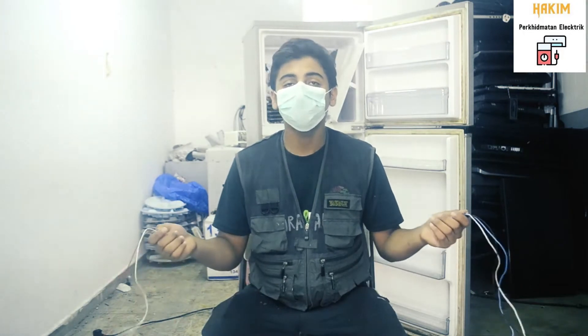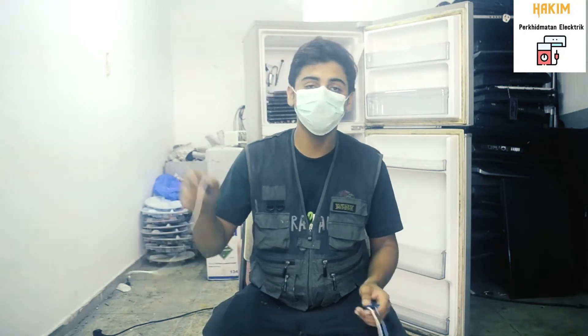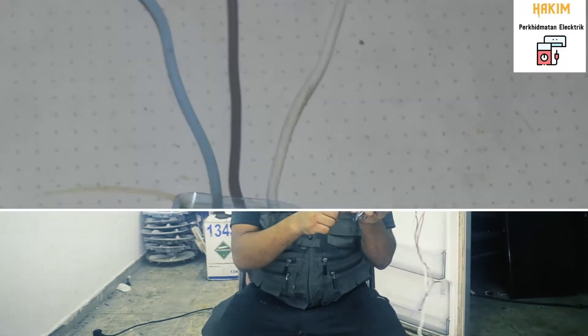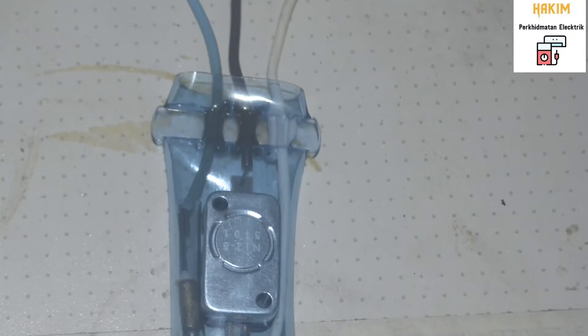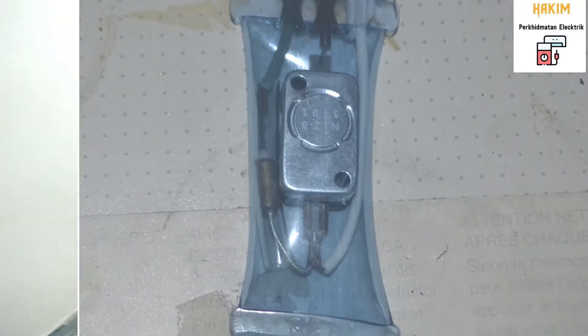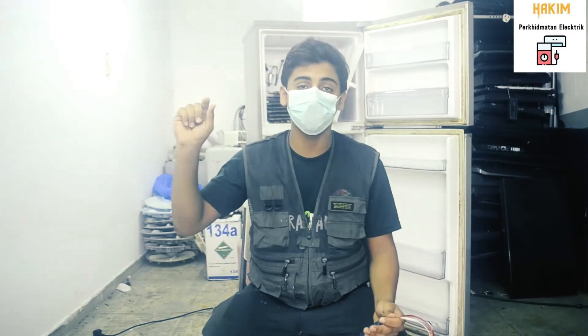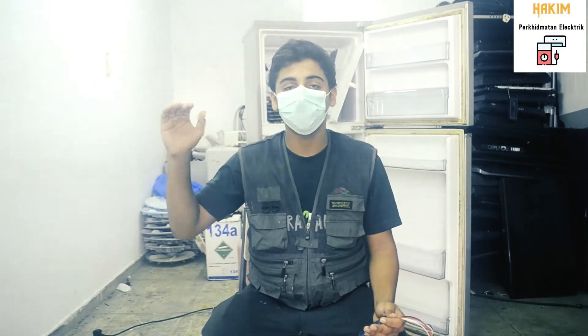They actually tell the heater, the heater in the refrigerator, when to start and when to not start. This inside a defrost thermostat has a temperature sensor, which checks the temperature. And if the temperature is more than what it requires, it tells the heater to turn on. And when the temperature comes to the point where it is balanced, then it tells the heater to turn off.